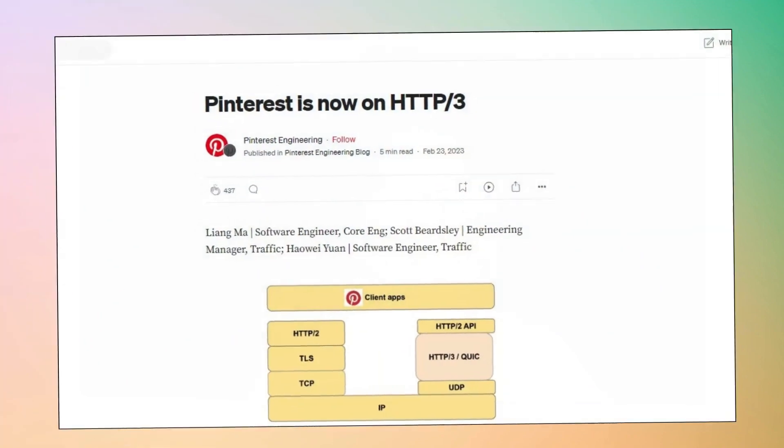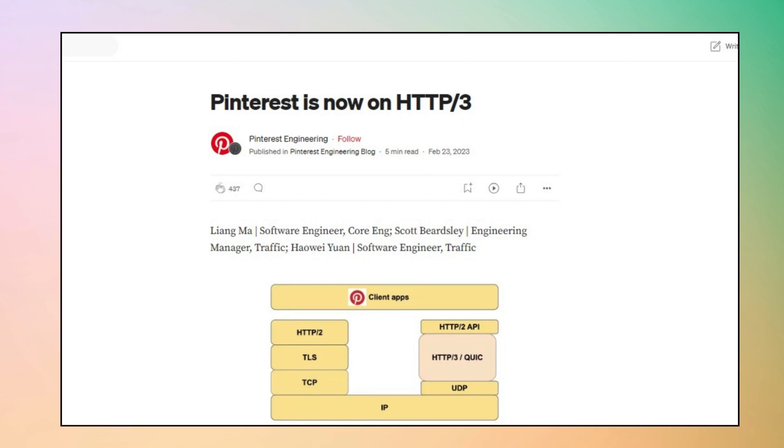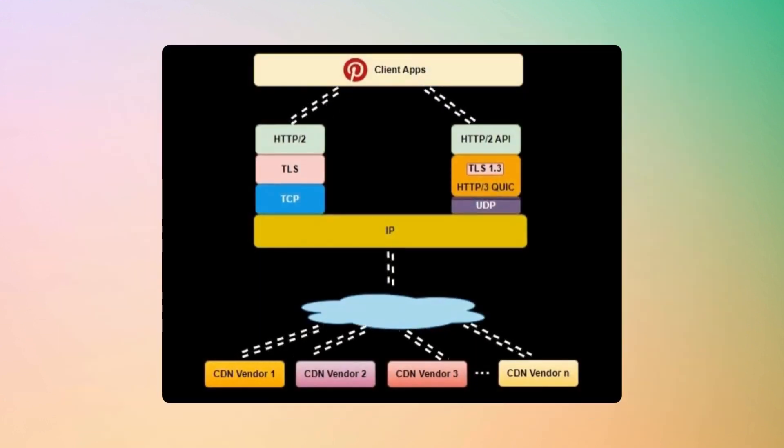Ever wondered why a platform as massive as Pinterest decided to move from HTTP2 to HTTP3? In today's video, we will discuss the challenges of HTTP2, advantages of using HTTP3, and how Pinterest benefited from migrating to HTTP3. In a recent announcement, Pinterest revealed its migration from HTTP2 to HTTP3, marking a significant improvement in its networking infrastructure. The aim was to enhance the user experience and improve critical business metrics by leveraging the capabilities of the modern HTTP3 protocol.